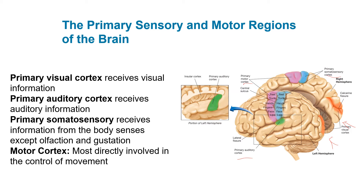You can see the calcarine fissure, which is a large fissure in the primary visual cortex. This basically allows the visual cortex to have more surface area. The central sulcus divides the somatosensory and the motor cortex — there are neurons that go across it allowing them to communicate, but it serves as a dividing line between the two.